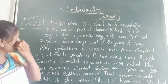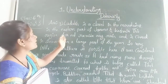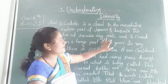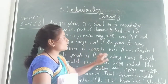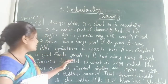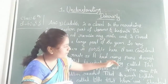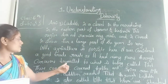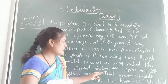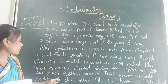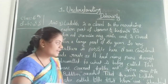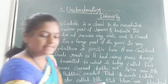Ladakh is a desert in the mountains in the eastern part of Jammu and Kashmir. This region does not receive any rain and is covered in snow for a large part of the year. So very little agriculture is possible here. It was a good trade route as it had many passes through caravans to travel to what is today called Tibet.